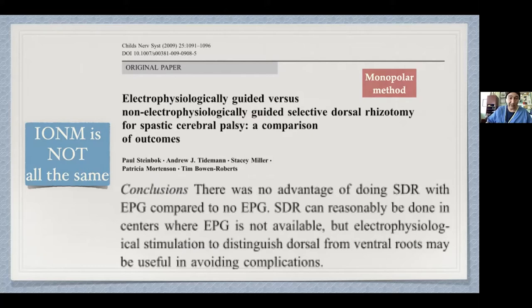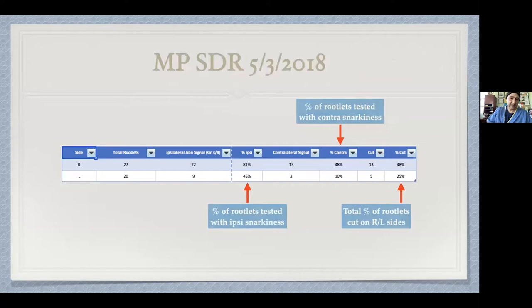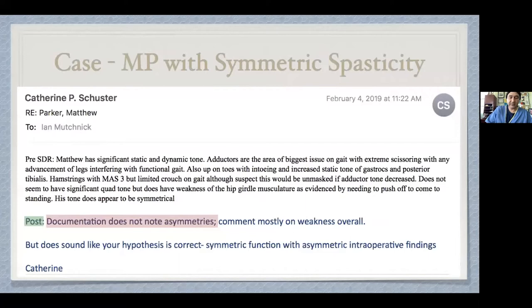We started using Vokes, and there was a really pivotal moment in 2019. We had a kid come in with symmetric spasticity of the lower extremities — pre-SDR, his tone did appear symmetrical. But testing the rootlets, we found 81% had ipsilateral snarkiness on the right side — meaning an electrophysiologic signature indicating they might justifiably be cut — while on the left side only 45% had ipsilateral snarkiness and only 10% had contralateral. So we ended up doing this very asymmetric bilateral rhizotomy, and the outcome was a symmetric reduction in his tone, which is kind of a big deal.